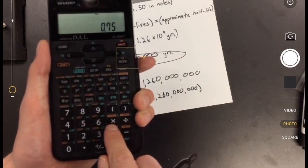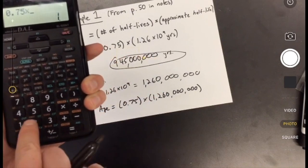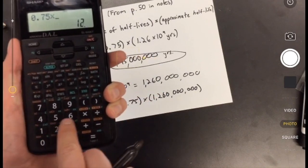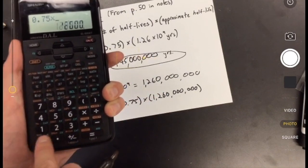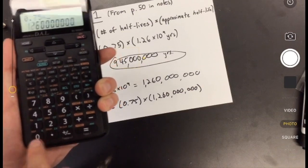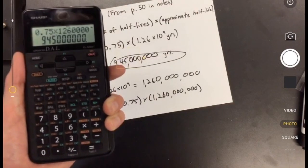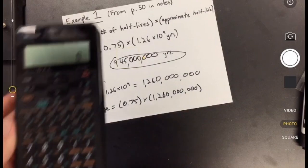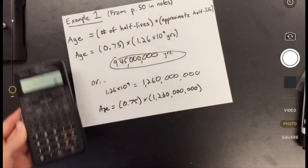And then you could just say 0.75 times 1. Be careful counting your zeros. 2, 6, 0, 0, 0, 0, 0, 0, 0. And you'll get the exact same answer. So just a refresher on how to type these big numbers into your calculator.